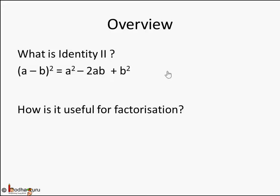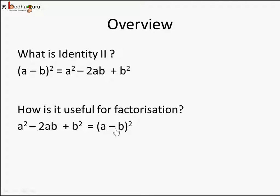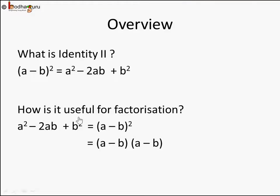So how is identity 2 useful for factorization? We write it in reverse: a square minus 2ab plus b square is equal to a minus b whole square. That's what identity means — left hand side equals right hand side. So if any algebraic expression is of this form, we can write it as a minus b into a minus b, which is the product of its factors.